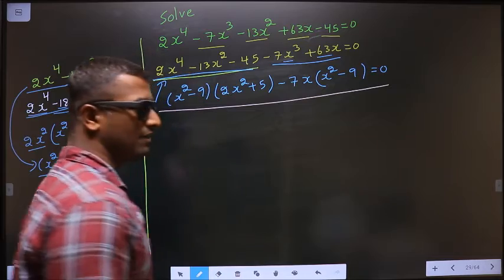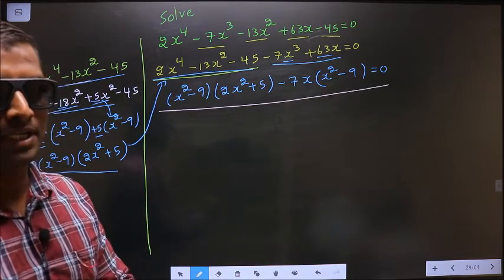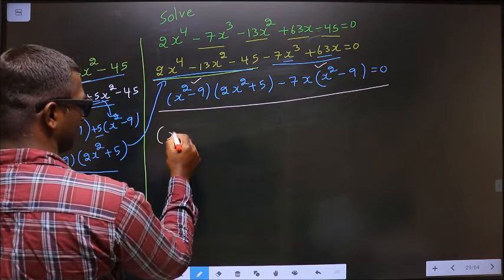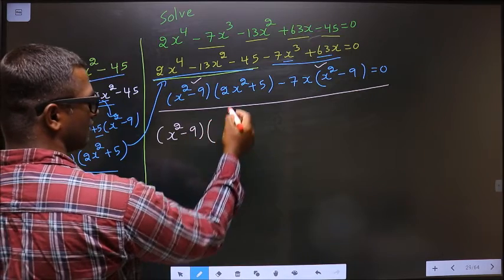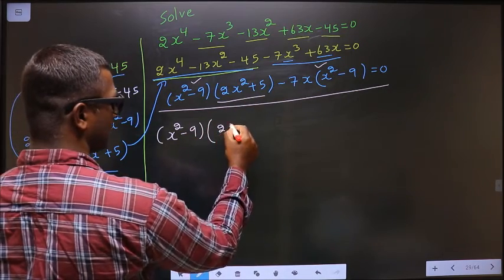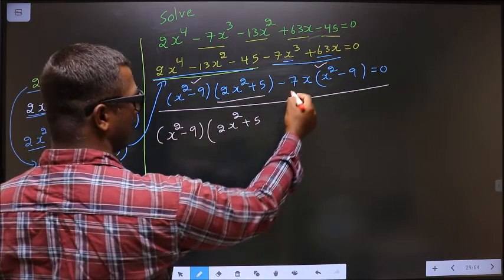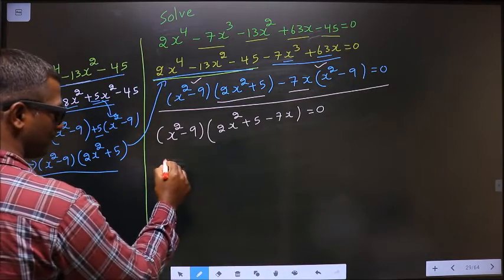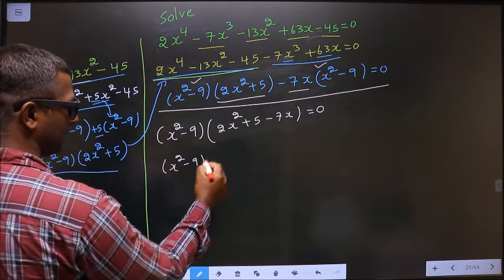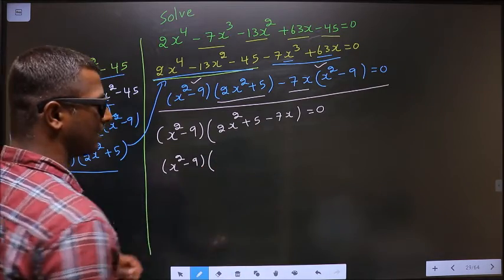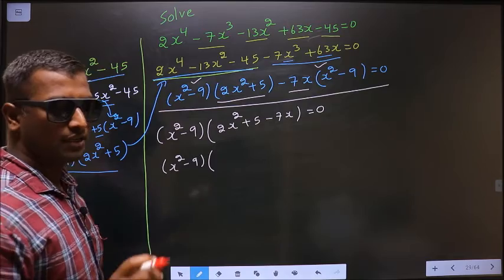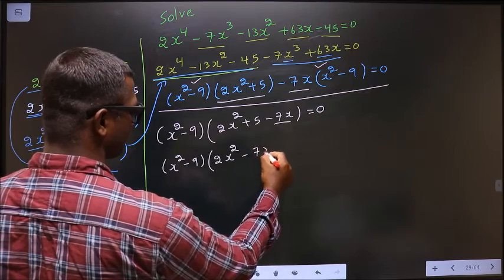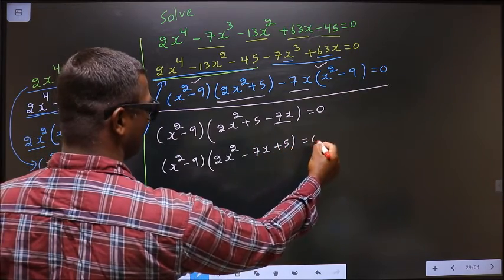From this entire equation, what can be taken out common now is x² - 9. Here I get 2x² + 5 and here -7x, equal to 0. Now, x² - 9. In this bracket, arrange it in proper quadratic form: x² first, then x, then constant, equal to 0.